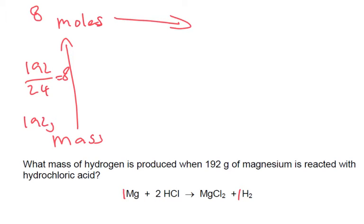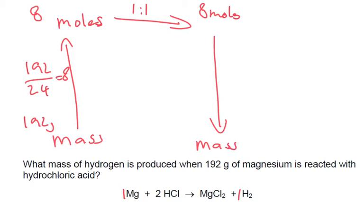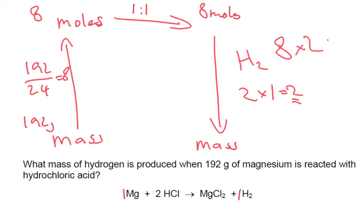What's the ratio? Well it's a 1 to 1 ratio, that means we've got 8 moles of hydrogen. Then back down to mass. Now hydrogen is H₂, so 2 times by 1 is equal to 2, so that means 1 mole would be 2 grams, but we've got 8, so 8 times by 2 is 16, therefore the mass is going to be 16 grams.